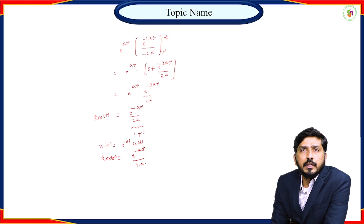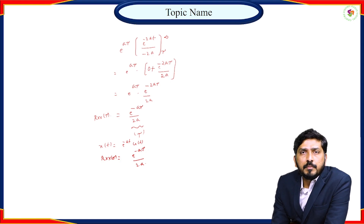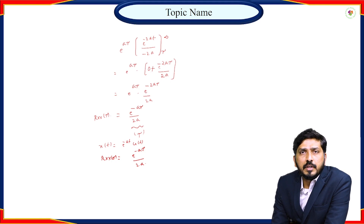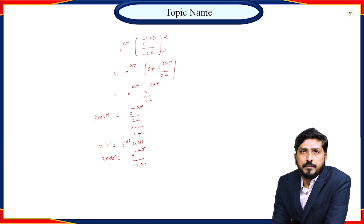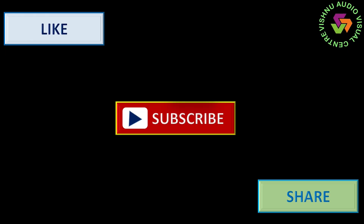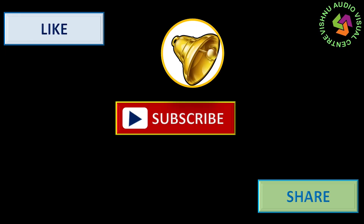In the next class we will see a few more problems related to autocorrelation, one problem based on the fourth property that Fourier transform of autocorrelation leads to energy spectral density, and we will also discuss cross-correlation properties and related problems. Thank you all for attending the session. Like, share, and subscribe, and hit the bell icon for more updates.